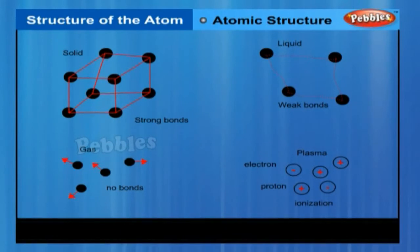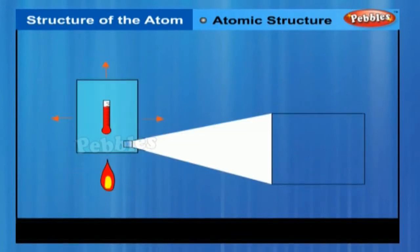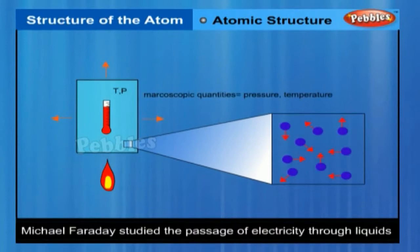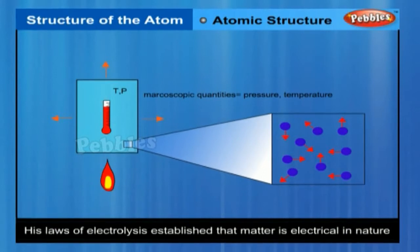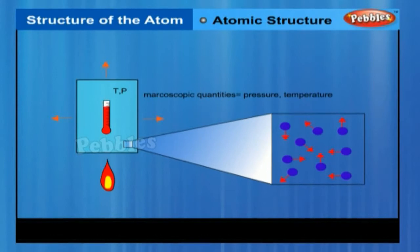The discovery of electricity motivated research that has led to the modern concepts of the atom. Michael Faraday studied the passage of electricity through liquid solutions. His famous laws of electrolysis established that matter is electrical in nature. In other words, matter is composed of positively charged particles and negatively charged particles.